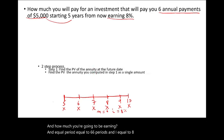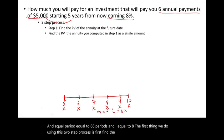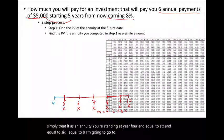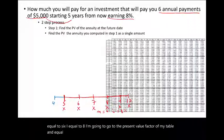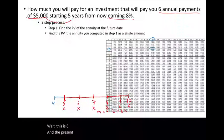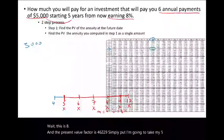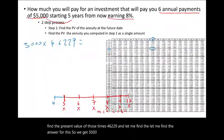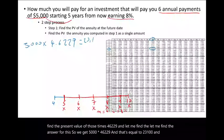The first thing we do using this two-step process is find the present value of this annuity — simply treat it as an annuity. You are standing at year 4, with n equal to 6 and i equal to 8%. Going to the present value annuity factor table, n equals 6 and i equals 8%, the factor is 4.6229. So we take $5,000 times 4.6229, which equals $23,114. At year 4, you are standing with $23,114.